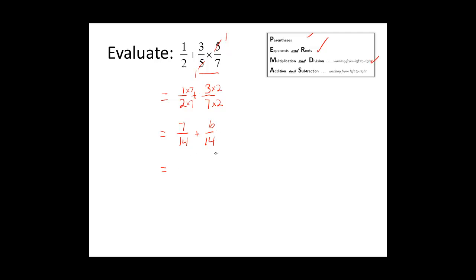We have the same denominator, so we will add our numerators. Seven plus six is equal to thirteen, and we keep the denominator. So thirteen-fourteenths is the answer to this problem.